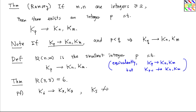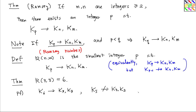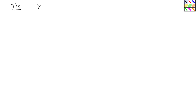Although the definition of the Ramsey number is quite simple, very little is known about this number. The theorem states it is symmetric: R(N,M) = R(M,N). Also, R(N,2) = R(2,N) = N. These two facts are easy to check.